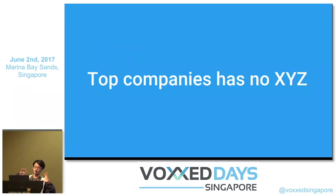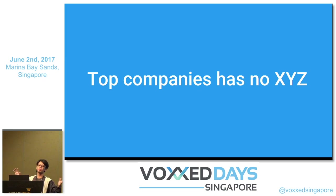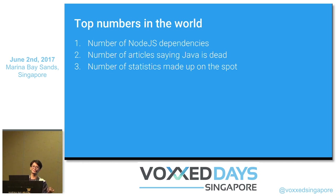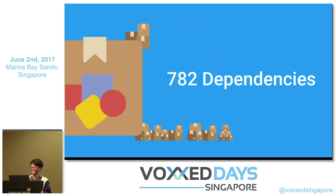Instead of the usual 'top companies have no X, Y, Z' — which you've probably heard a lot and is kind of boring — here are the top numbers in the world: number one, number of Node.js dependencies; number two, number of articles saying Java is dead; and number three, number of statistics made up on the spot. The demonstration app I'm going to show you has 782 dependencies — no joke at all.